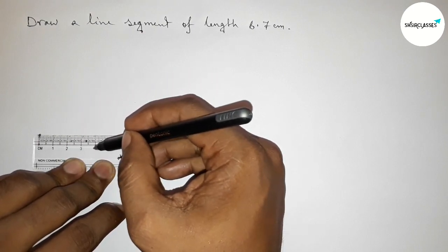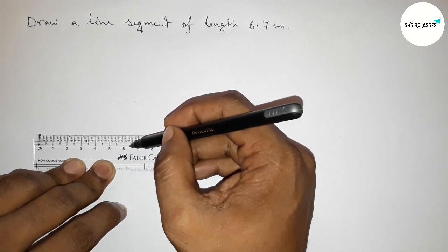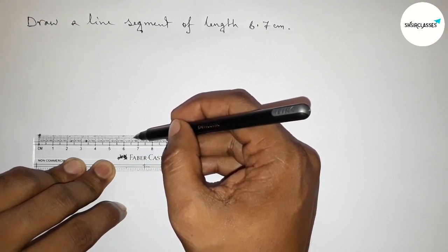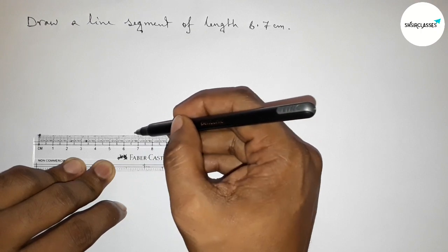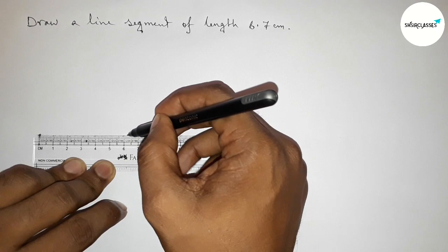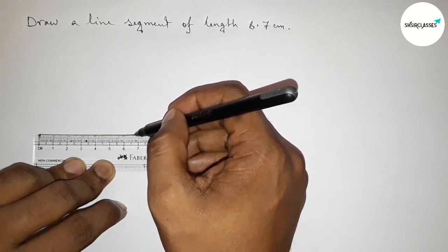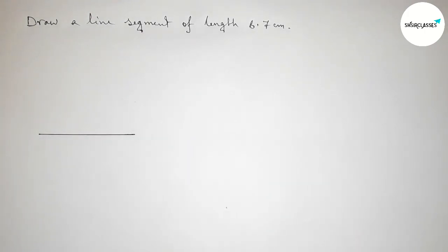5, 6, this is 6.5, okay, and this is 6.6 and 7, so this is 6.7 centimeter. So first marking here 6.7 centimeter, then joining this line, okay, so joining this line and taking here point A and here B.